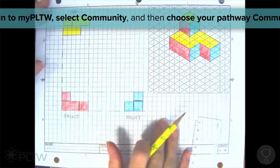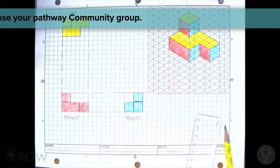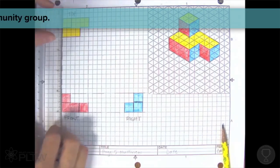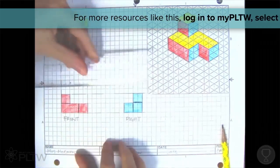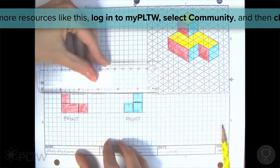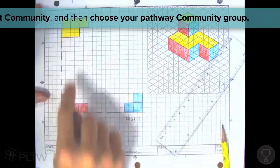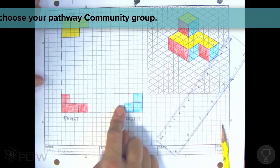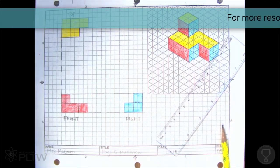Now I have drawn my yellow top, my red front, and my right blue. Notice that the front and the top line up from side to side. And the front and the right line up from top to bottom. If your views, your three views, do not line up, then that's a quick way to see that you have made a mistake and you need to go back and fix it.